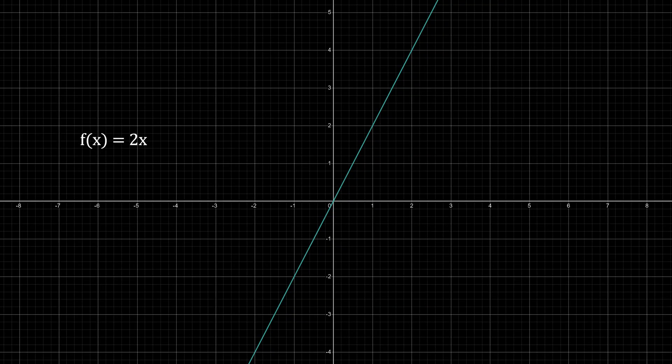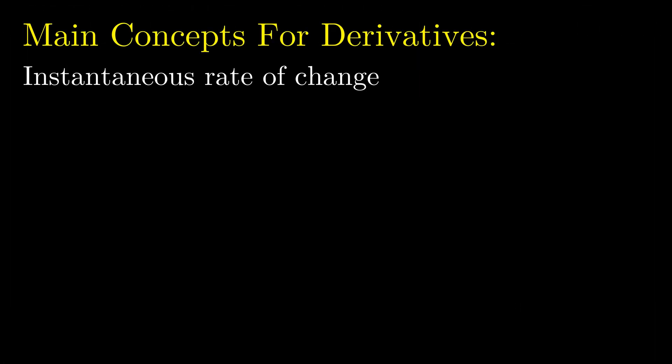If we take f(x) equals 2x, the function is growing at a rate of 2, the gradient. f(x) rises by 2 as x increases by 1. The derivative is simply asking, what is the gradient at any point on a graph?